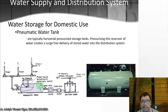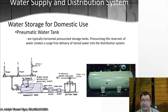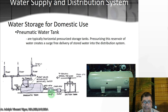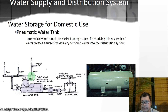Then you have the pneumatic water tank, which is typically a horizontal pressurized storage tank. Pressurizing this reservoir of water creates a surge-free delivery of stored water into the distribution system. It includes a pump, gate valve, check valve, and suction — air pressure is built up in the pneumatic tank, and when you open it, water flows to the different branches and risers.